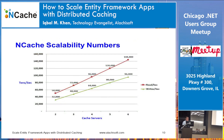A good distributed cache gives you fairly linear scalability. These are some NCache numbers for reads and writes. The reason writes are not as fast as reads is because replication is happening — whatever you update in one server gets copied to at least one other server. But it's still a linear line.